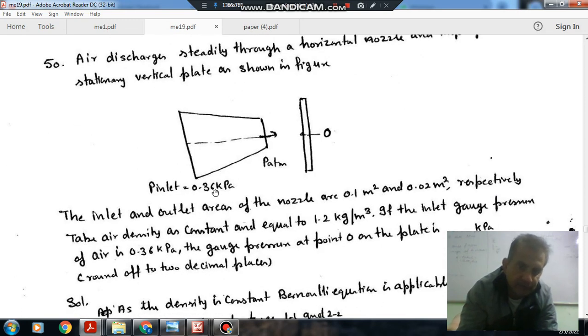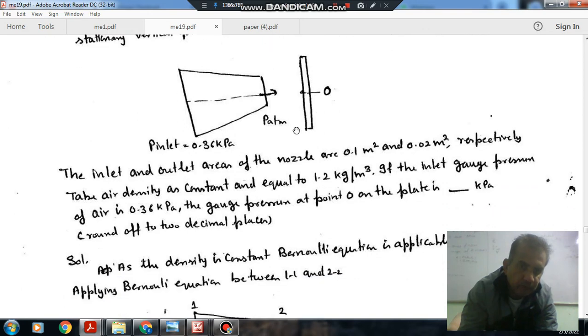This is the inlet pressure 0.36 kPa, and this is the first pressure. This is the plate, and this point is 0. The inlet and outlet areas of the nozzle are 0.1 m² and 0.02 m² respectively. Take air density as constant and equal to 1.2 kg per m³. If the inlet gauge pressure is 0.36 kPa, the gauge pressure on the plate is dash kPa.